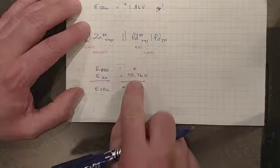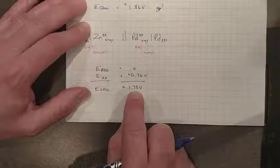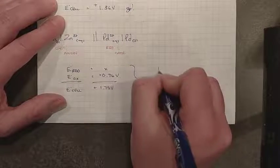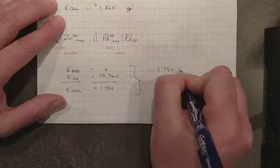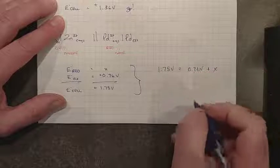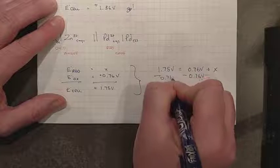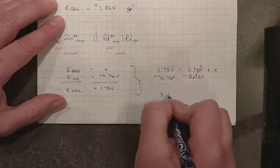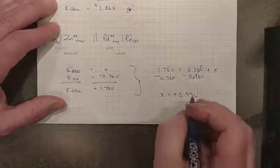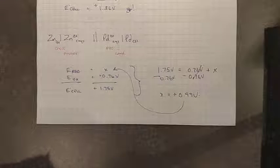So what plus 0.76 equals 1.75? If you don't like it in that format, we can just move it over here a little bit. 1.75 volts is equal to 0.76 volts plus x. Subtract your 0.76 from both sides and x is equal to positive 0.99 volts. Therefore, the reduction potential of palladium is 0.99 volts.